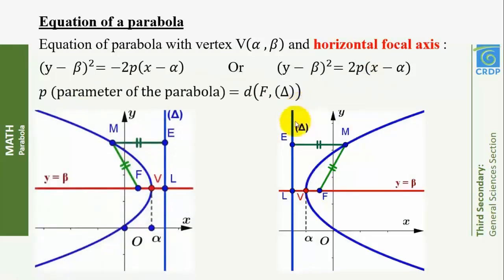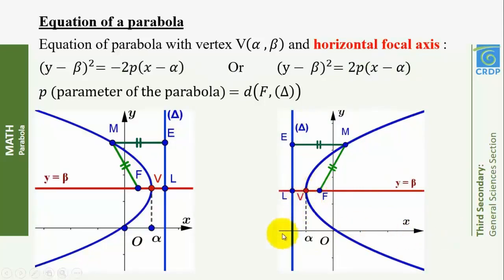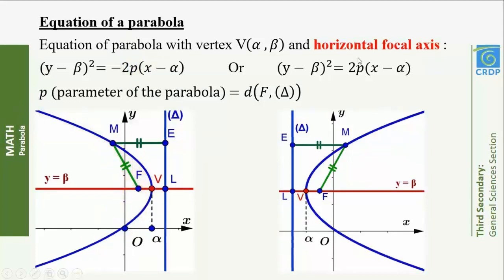An equation of a parabola with vertex V(α, β) and horizontal focal axis is (y − β)² = −2p(x − α) or (y − β)² = 2p(x − α), where P is the parameter. When we have ±2p(x − α), the focal axis is parallel to x'x. If the coefficient of x is negative, the parabola opens left; if positive, it opens right.